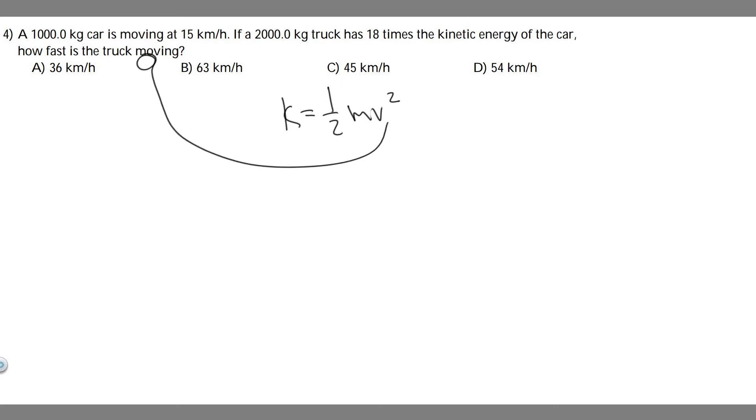Kinetic energy equals 1/2 times the mass of the first car, which we know is 1,000, times its velocity squared, so 15 squared. So you want to do 0.5 times 1,000 times 15 squared.